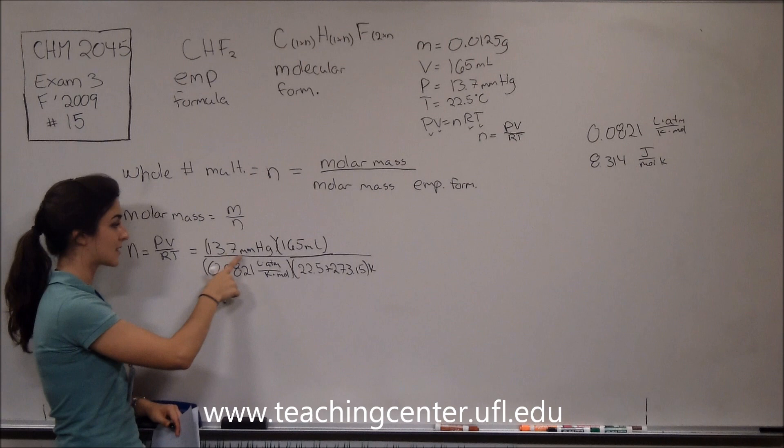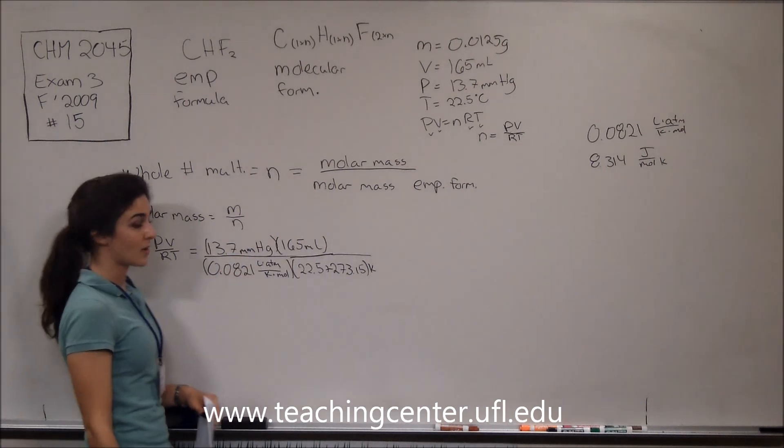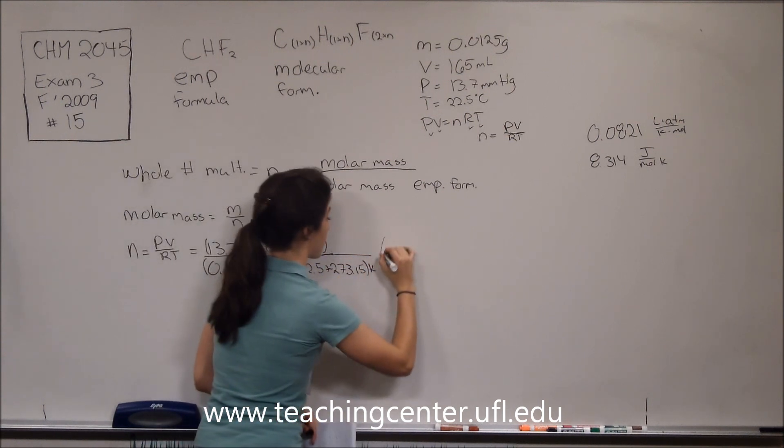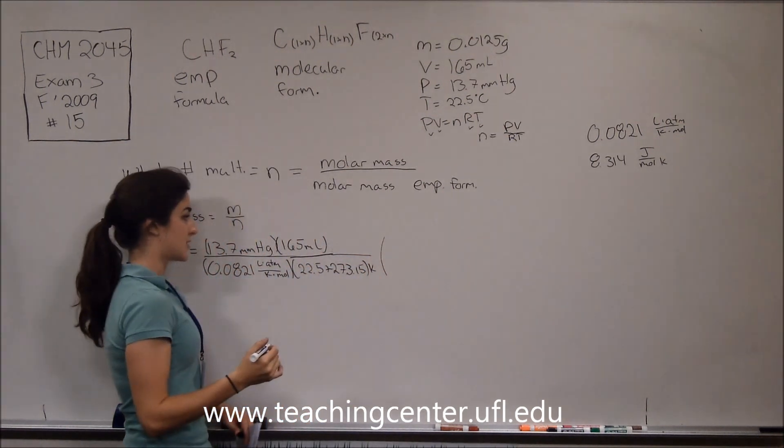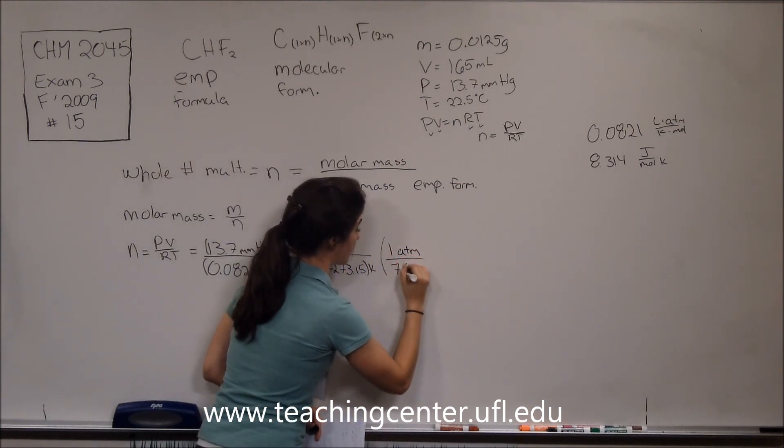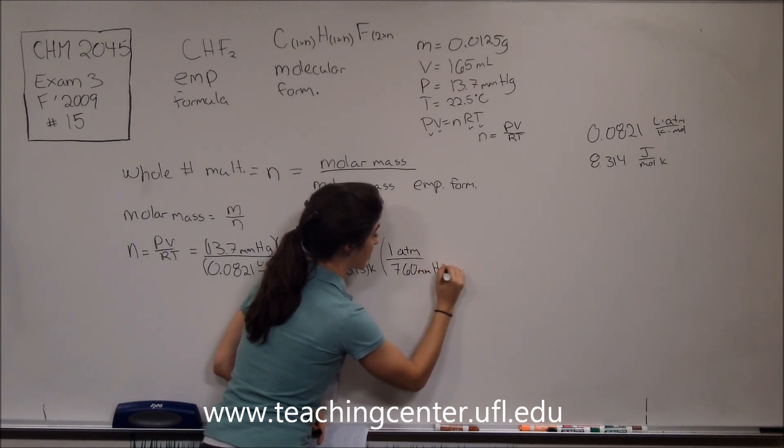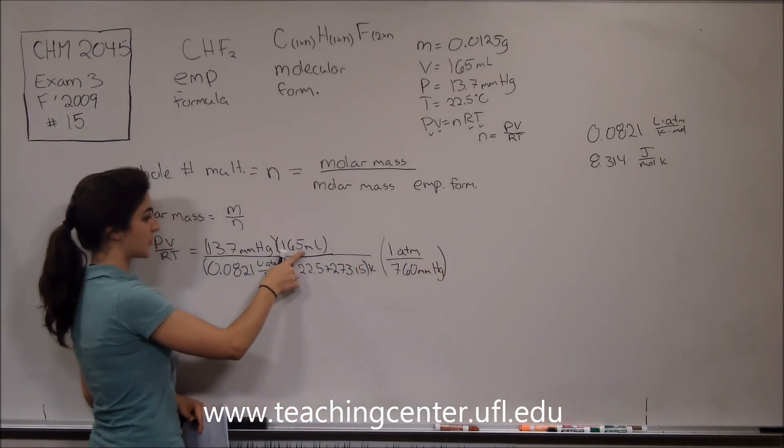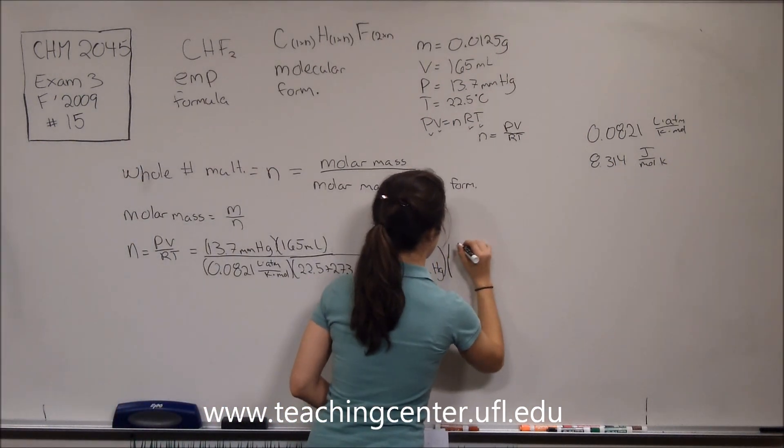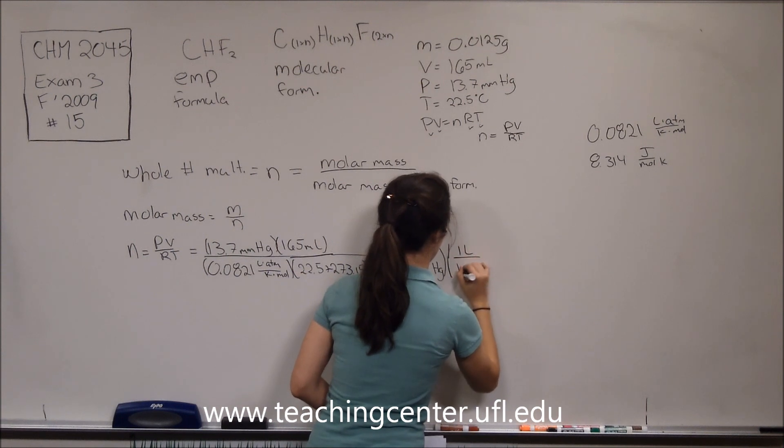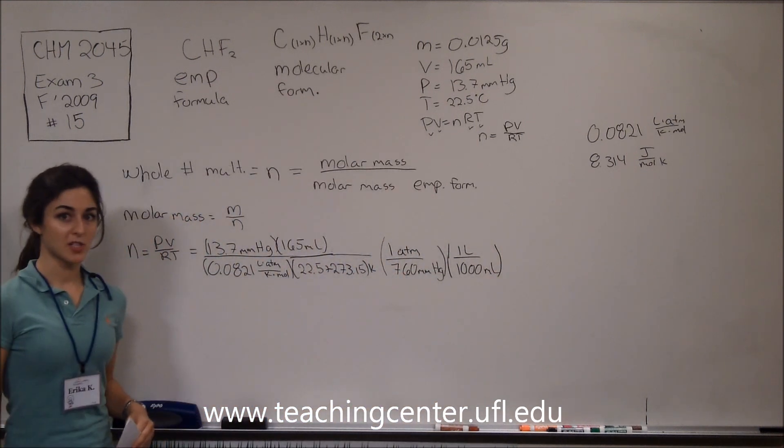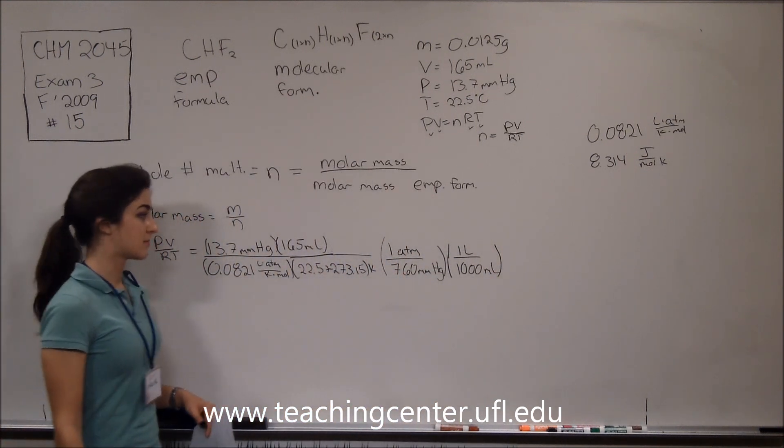Now, before we can multiply these out, we need to convert millimeters of mercury into atmospheres. And the conversion for this is something that you'll have to have memorized, which is one atmosphere for 760 millimeters of mercury. Also, we need to convert milliliters into liters, so one liter for 1,000 milliliters.